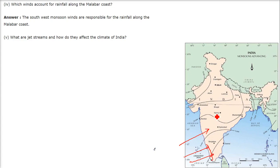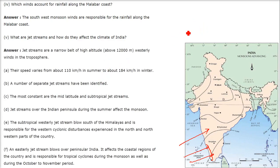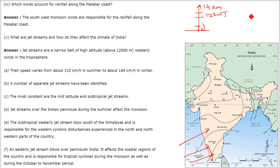What are jet streams and how do they affect the climate of India? From the ground level up to around 14 km, we have the troposphere where all seasonal and air activity occurs. At around 12 km altitude and at 27 to 30 degrees latitude — which falls within India's range of 8 to 37 degrees — there are very high-speed winds. These are jet streams: narrow belts of high-altitude winds at around 12,000 meters.